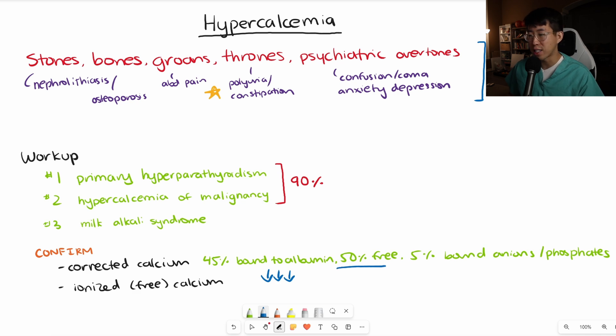However, it's not really telling you anything about the amount of free ionized calcium. We have a correction factor for the patient's albumin: 4 minus the patient's albumin, multiply that by 0.8, and then add the patient's calcium. That's how you calculate a corrected calcium.